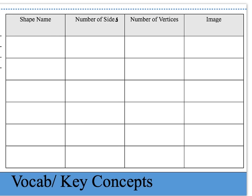Let's complete this table to look at what vertices look like on different shapes. The first shape is a triangle, which has three sides and three vertices. Here's one vertex where two lines meet, here's another where two sides meet, and here's the third vertex where another two sides meet.